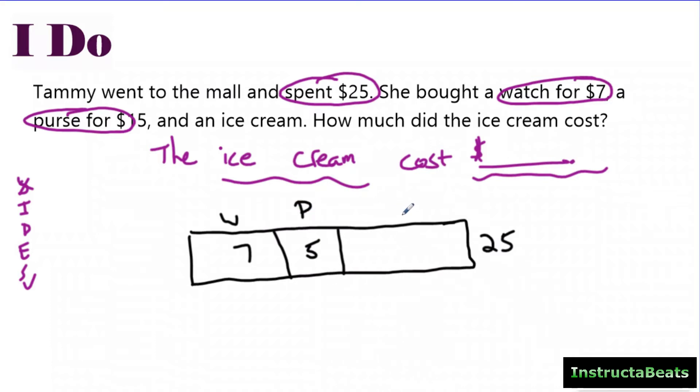And then she also bought an ice cream. Now I thought about editing this, but this goes back to being neat. She did not buy a purse for $5. She bought a purse for $15.